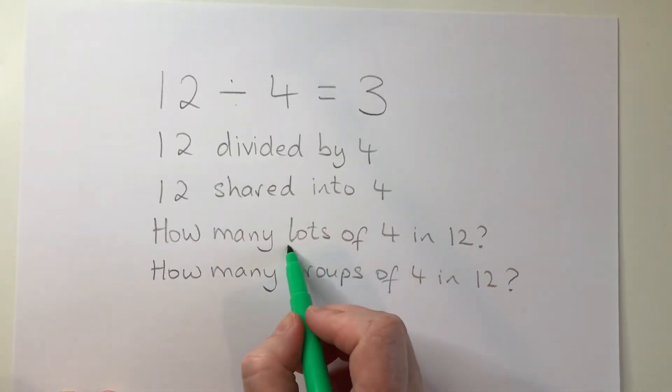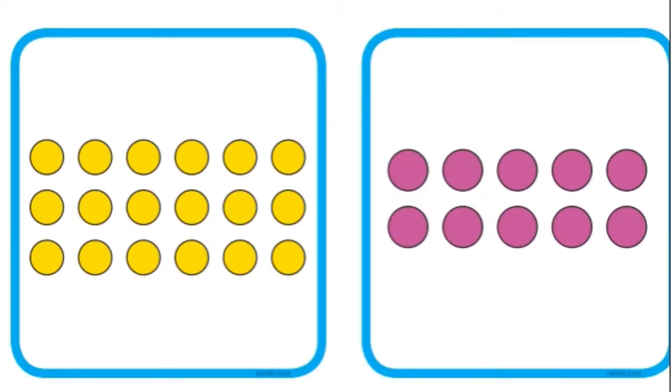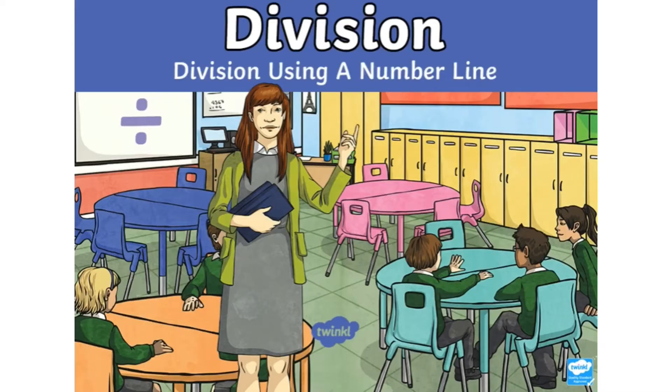Thinking about division this way is really important when using the number line method. Sorting numbers into arrays is one way to visualize how multiplication and division are to do with grouping, but we can also use the number line to show how we can jump up or down in groups when multiplying and dividing.